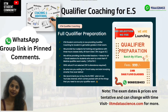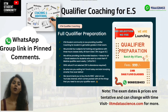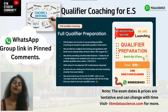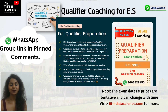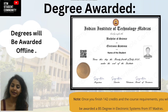IITM student community is providing qualified coaching for students to crack their exams easily. The exam dates and prices may vary. Don't forget to join the Electronic Systems exclusive WhatsApp group from the pinned comments of this video. Here is how the degree is going to look — you'll be awarded this degree once you finish 142 credits and the course requirements.